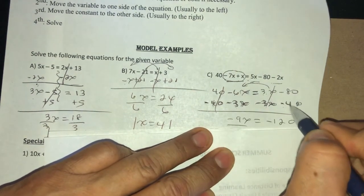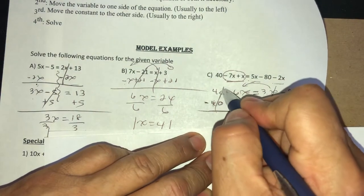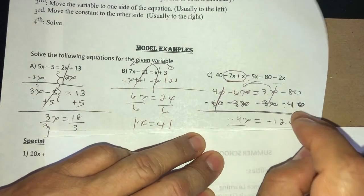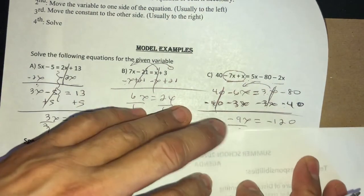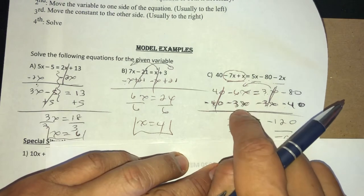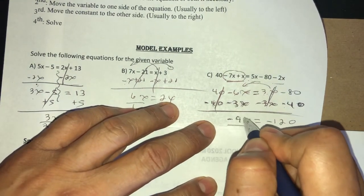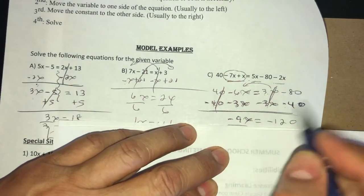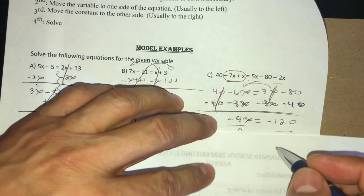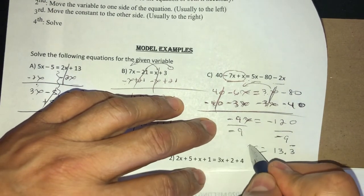What happened is, because I want my variable here, the constant is gonna cancel. And because I want my constant there, the variable is gonna cancel there. I just solve: negative 6 minus 3, that will give you negative 9x, and negative 80 minus 40 will give you negative 120. Now you divide by negative 9 both sides, and your answer should be 13.3, but that goes on forever.